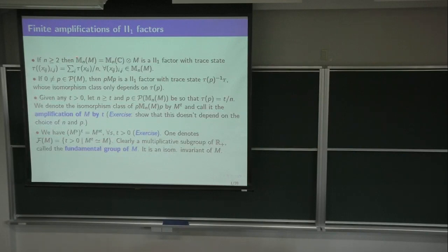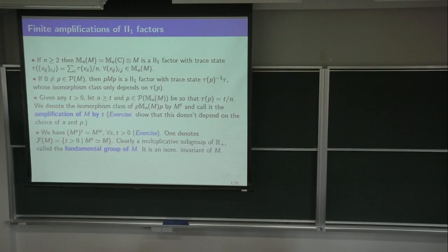You check immediately that this is also a II₁ factor, by one of the many definitions and ways to characterize them that we learned about. On the other hand, if the amplifying number t is less than one, then you take a projection p in M that has trace equal to τ(p), and this corner given by p of M — this algebra pMp — will be a II₁ factor with this normalized trace. Its isomorphism class obviously only depends on t and not on the trace of the projection, because of the equivalence in M.